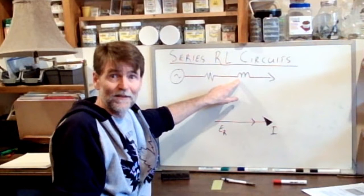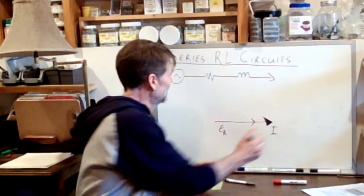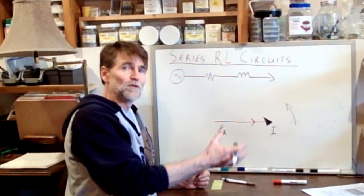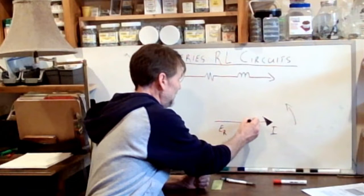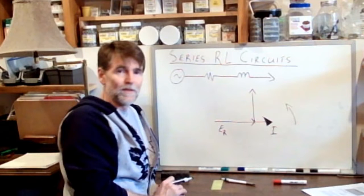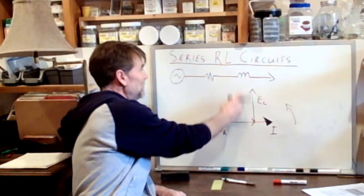E subscript L is the voltage vector representing the voltage drop across the inductor. And this is where we talk about the leading and lagging situation. So we said that the current lags the voltage. So forward direction is counterclockwise. So if the voltage is found to be leading the current, it's going to be in front of, and in front of by 90 degrees. So there is the voltage vector at the inductor. So that's E subscript L.